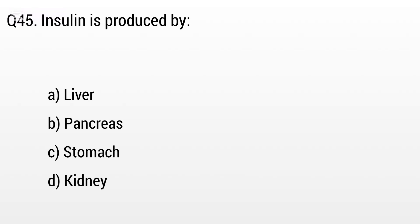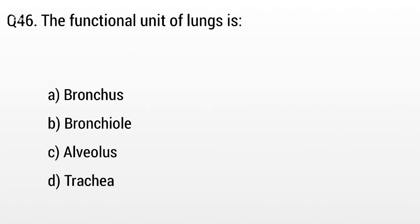Question 45. Insulin is produced by: Option A: Liver, B: Pancreas, C: Stomach, D: Kidney. The right answer is option B, Pancreas.